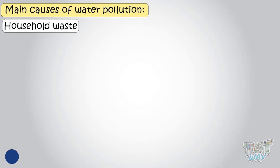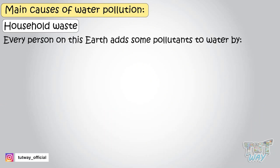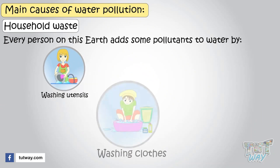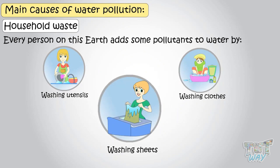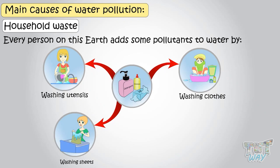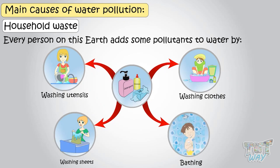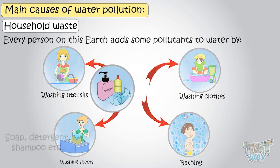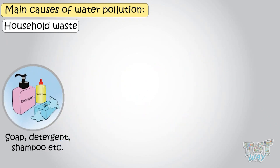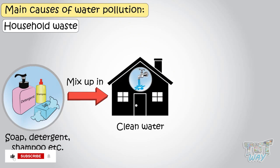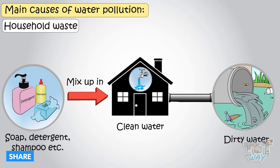Next is household waste. Every person on this earth adds some pollutants to water, as utensils, clothes, and sheets are washed in every house using some kind of detergent and soap. People bathe using soaps and shampoos. All these soaps, detergents, and shampoos mix up in clean water and change it into dirty water, which ultimately reaches some water bodies through long pipes and contaminates the water.